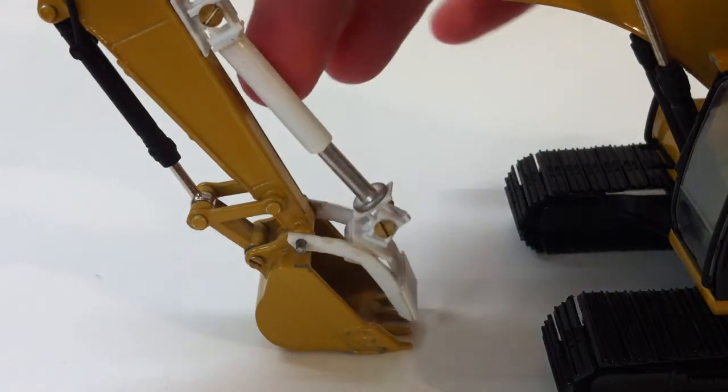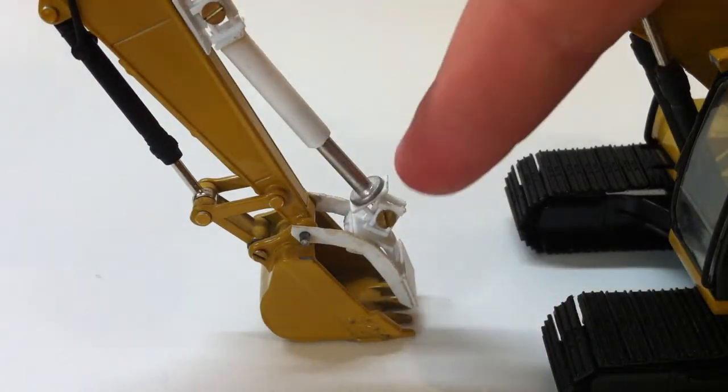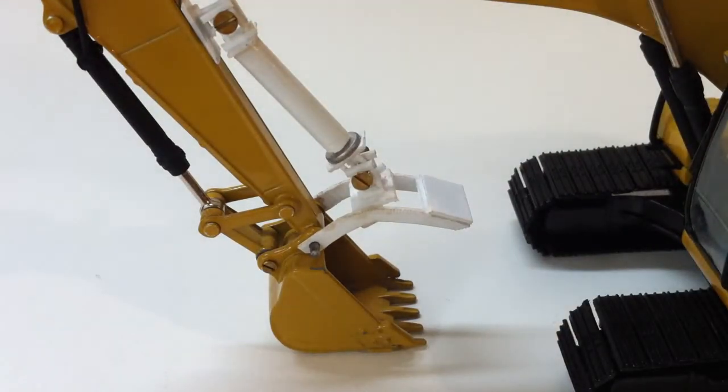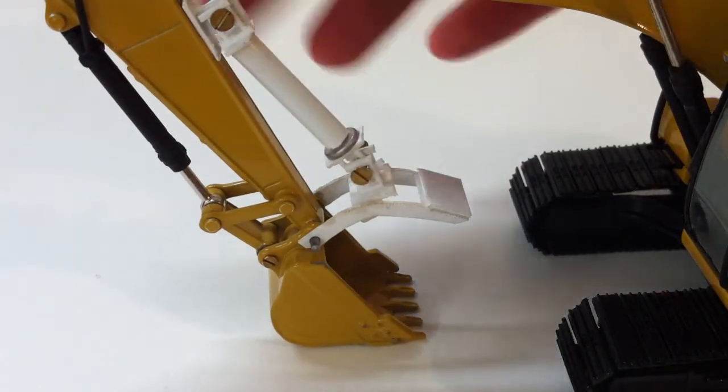And then I took plastic tubing and cut it to the size I wanted for the aluminum rod to slide up into the tube. So that's what I did for the cylinder.